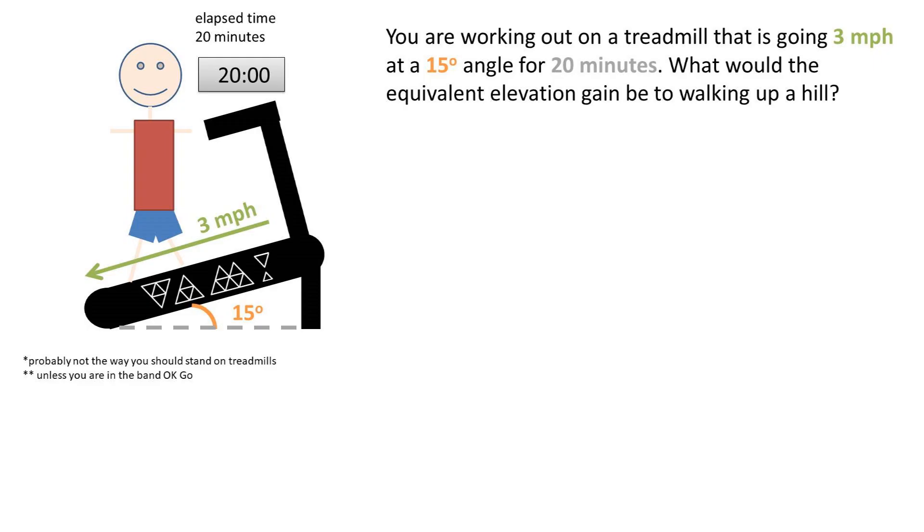In this problem, you're working out on a treadmill that is going 3 miles per hour at a 15 degree angle for 20 minutes. What would the equivalent elevation gain be to walking up a hill?